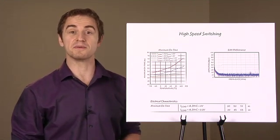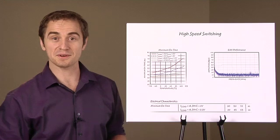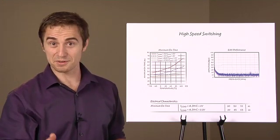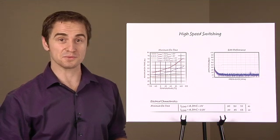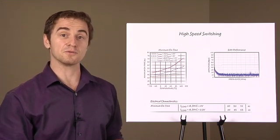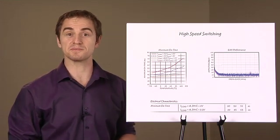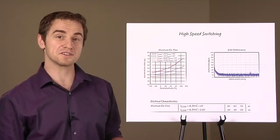Inductor choice can be based on specific application requirements rather than maximum switch current ratings of the 8610. For example, if the maximum load current is 1 amp, an inductor designed for 1.3 amps is sufficient. This greatly reduces PC board space because the inductor is often the largest passive component.